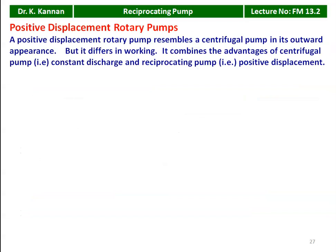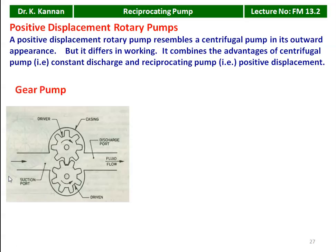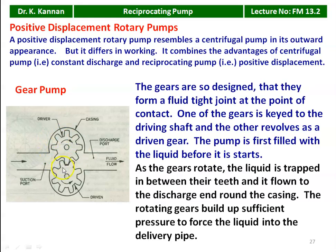Next, we discuss the positive displacement rotary pump. It resembles a centrifugal pump in its outward appearance but differs in working — it combines the advantage of the centrifugal pump (constant discharge) and the reciprocating pump (positive displacement). There are three types: gear pump, vane pump, and lobe pump. In the gear pump, there is a driver gear and a driven gear, with a suction port and a delivery/discharge port. The gears are designed to form a fluid-tight joint at the point of contact, so there is no leakage through the gear contact.